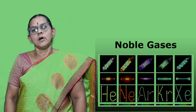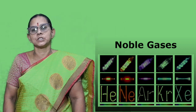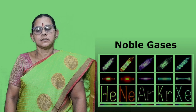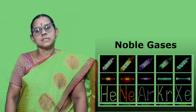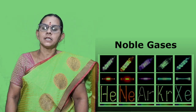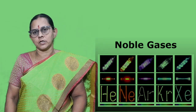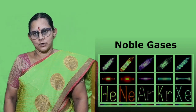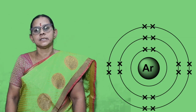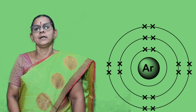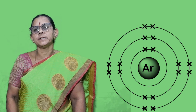Helium, neon, argon, krypton, xenon, radon — these are noble gases and inert gases. Why are they inert gases? They are inactive; they don't react much because they are stable. If you look at helium, there is only one shell with 2 electrons, so it is satisfied and stable. For all other noble gases, the outer shell has 8 electrons, so 8 is the capacity. They are all stable, so they don't give or accept any electrons.